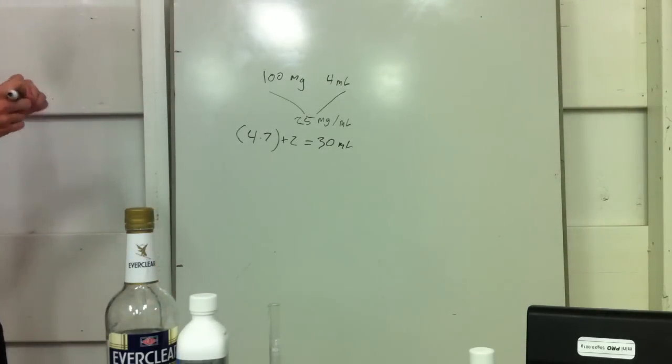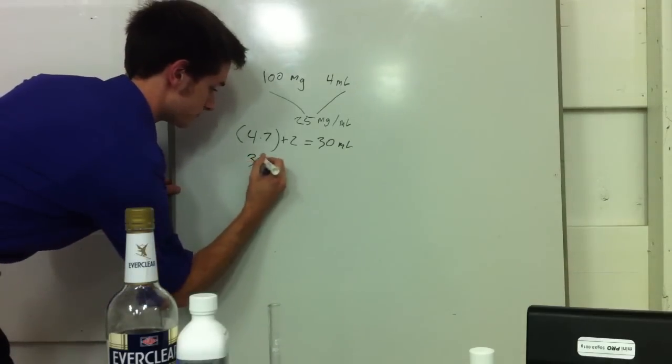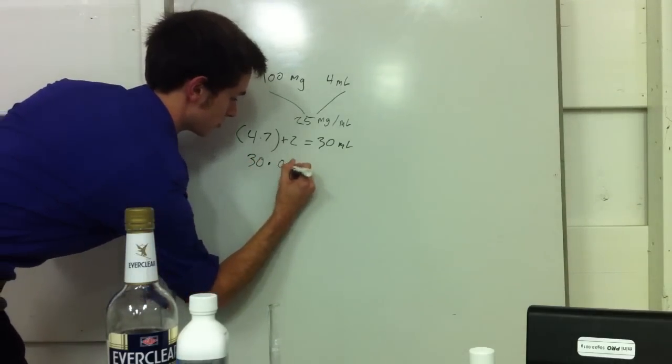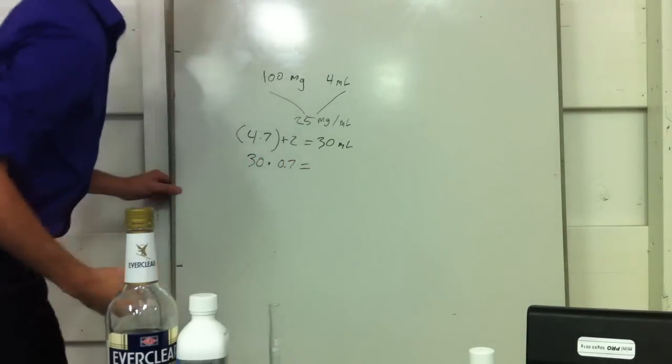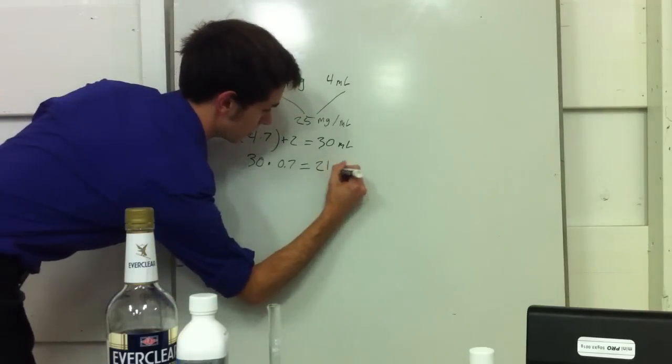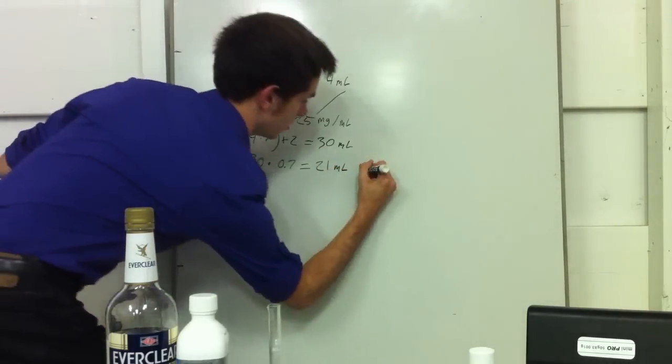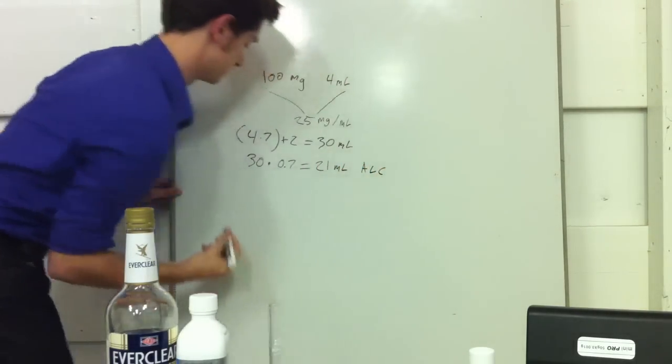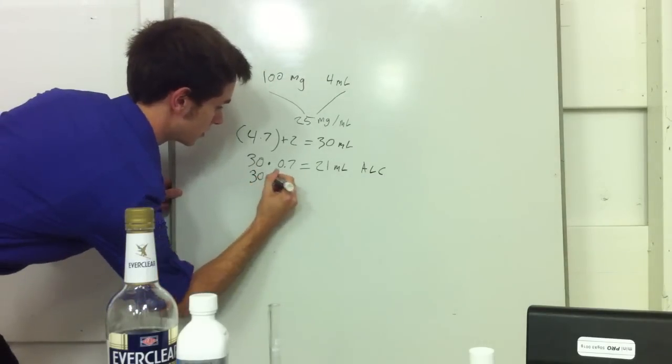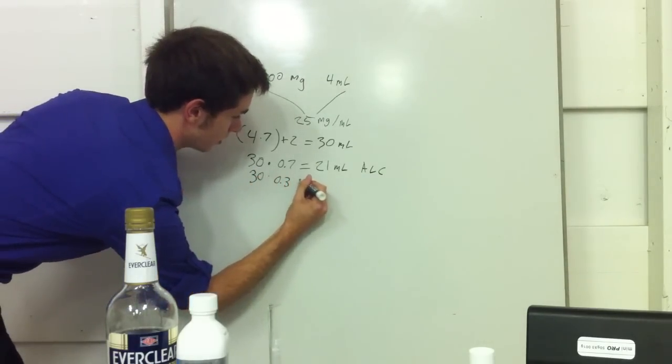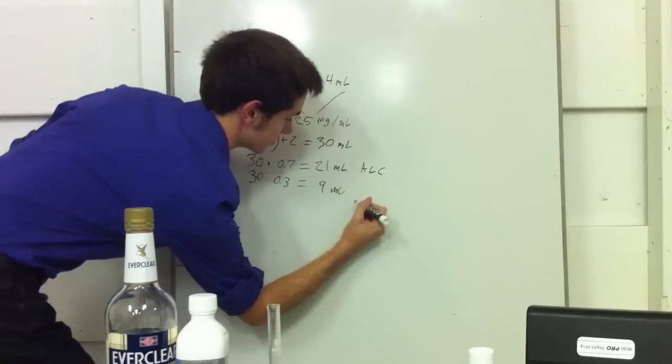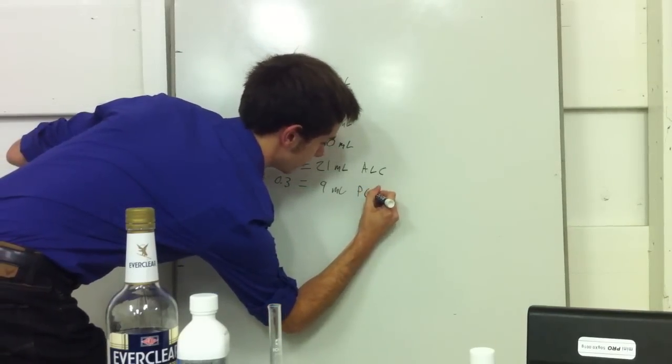Now let's divvy up the portions that are alcohol and the portion that's propylene glycol. So we're going to take the 30 times 0.7 and that will give us 21 milliliters of alcohol. And we'll go to 30 times 0.3 equals 9 milliliters of propylene glycol.